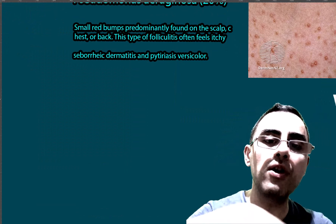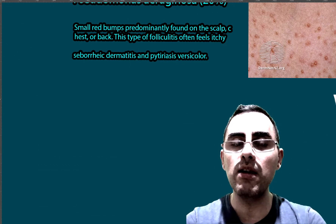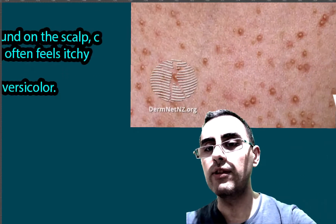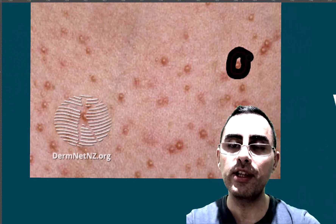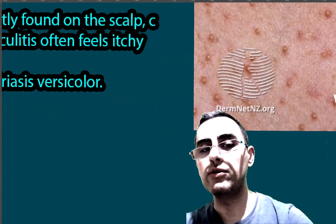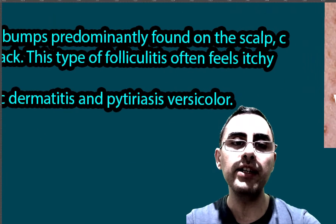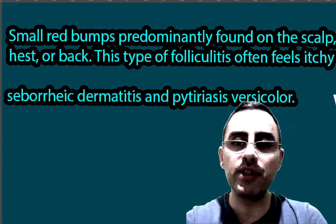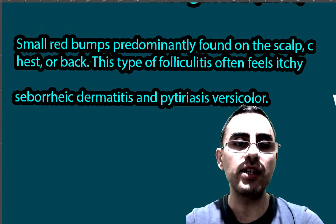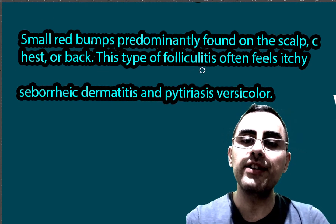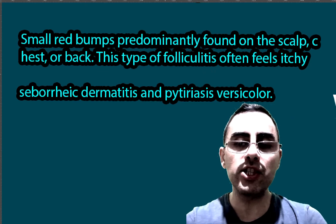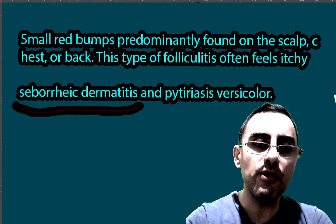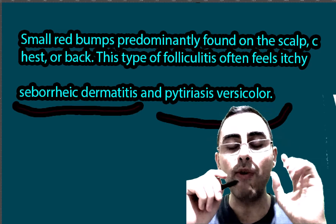The third most common cause of folliculitis is Malassezia furfur, a fungal infection. You can see the type of pustules it produces. It affects the back mainly, and importantly, Malassezia furfur causes small red bumps predominantly found on the scalp, chest, and back.